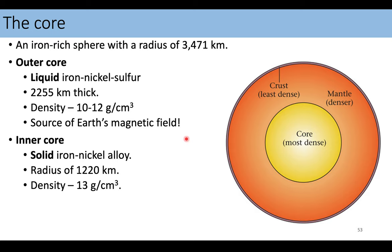The solid inner core — the big difference is that it is solid. It's a bit smaller radius-wise — it's about the size of the moon. Together the inner core and the outer core make up the most dense part of our earth, which is what we call the core.